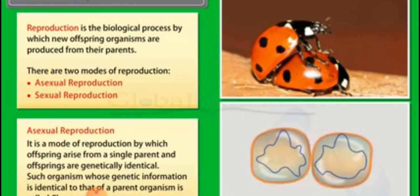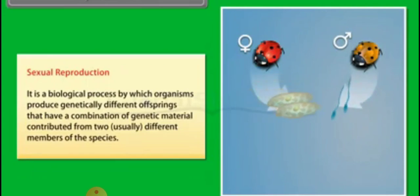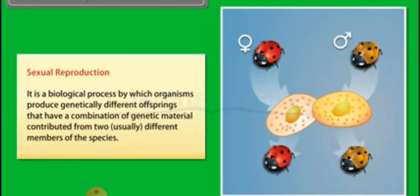So there is only involvement of a single parent that gives rise to clones, whereas in case of sexual reproduction there is fusion between the male and female gametes, that is egg and sperm, to give rise to offspring which are different from the parent.